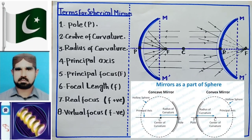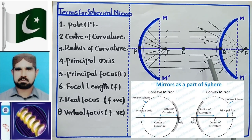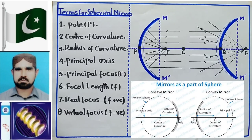Focal length positive होगी या negative होगी, focus real होगा या virtual होगा? अगर rays really इकट्ठी होती हैं एक point पे जिसको focus कहते हैं जैसा कि concave mirror में नजर आ रहा है, तो ऐसे focus को real focus कहते हैं और इसकी focal length positive हुआ करती है। अगर rays really इकट्ठी न हों बल्कि diverge हो जाएं, लेकिन पीछे बढ़ाने पर एक point से निकलती हुई आएं, तो वो point virtual focus होता है और उसकी focal length negative होती है। آئندہ ملیں گے ایک نئی video کے ساتھ۔